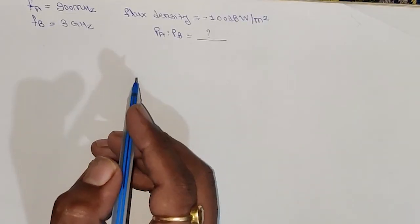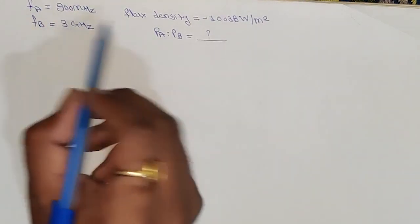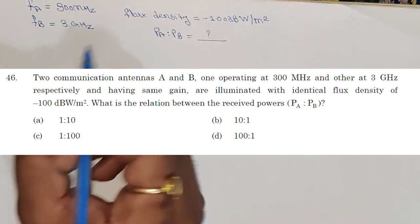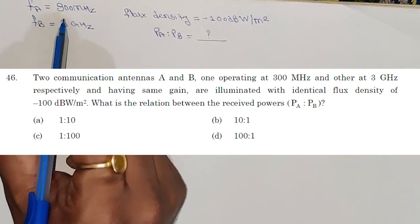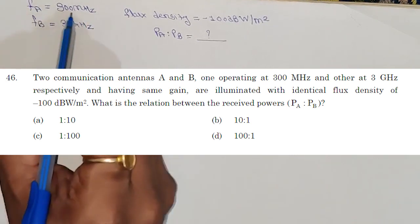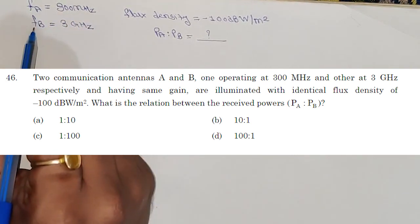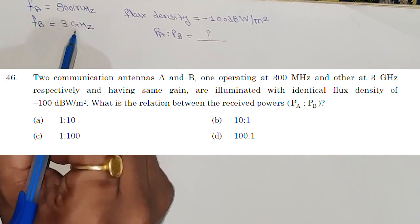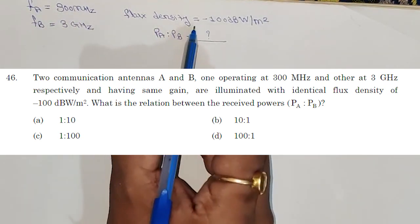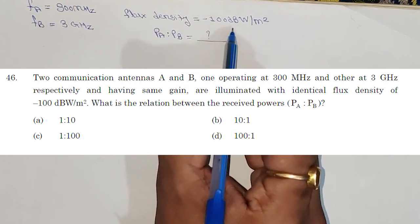Hello friends, welcome to GATE GYAN. Today we are going to solve question number 46 of the ISRO 2018 paper. In this question, we have two communication antennas A and B, one operating at 300 megahertz and the B antenna operating at 3 gigahertz. Also, one flux density is given that is minus 100 dB watt per meter square.